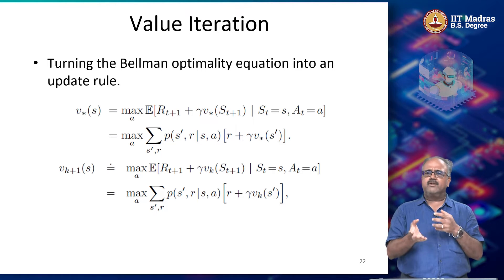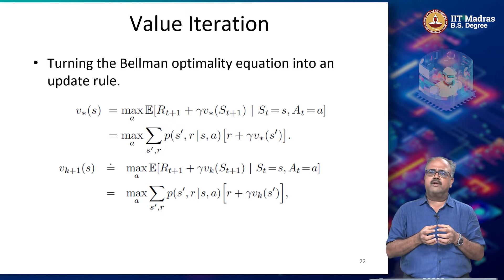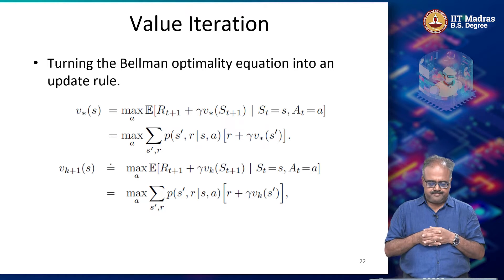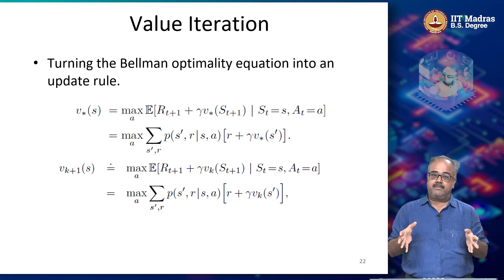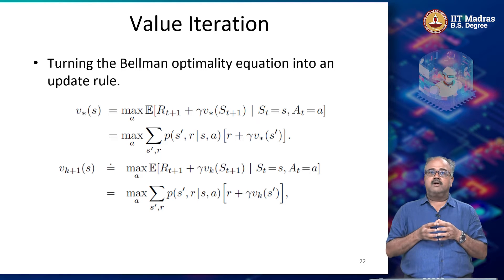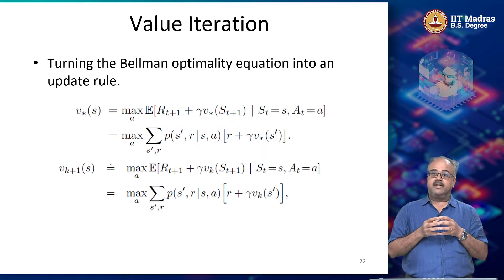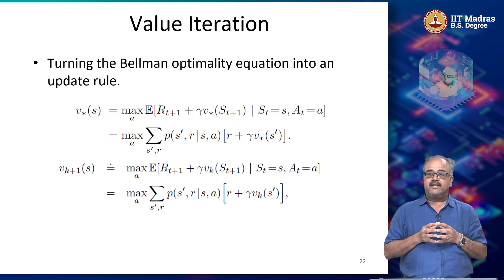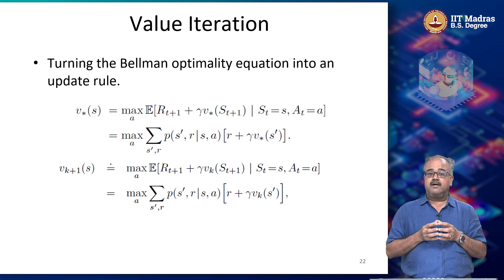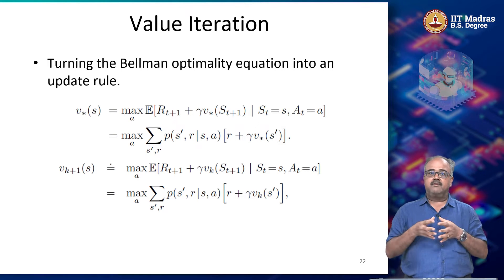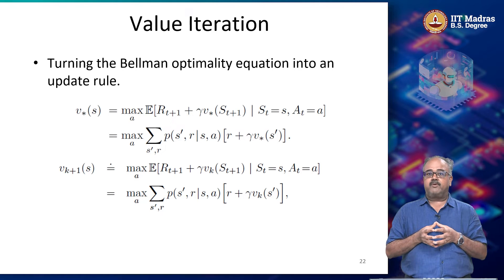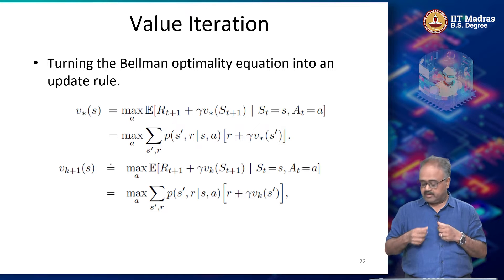We will come back to policy iteration and the different ways of doing iterative evaluation. In this lecture, we are going to look at another approach to solving the MDP. Again, you are given the full MDP — you are not working with some kind of lack of knowledge, which is what reinforcement learning is all about. When we start looking at proper reinforcement learning algorithms, we will look at algorithms that do not make assumptions about knowledge of P and R. But for now, we are looking at stochastic dynamic programming variations, and the algorithm we are going to look at is called value iteration.